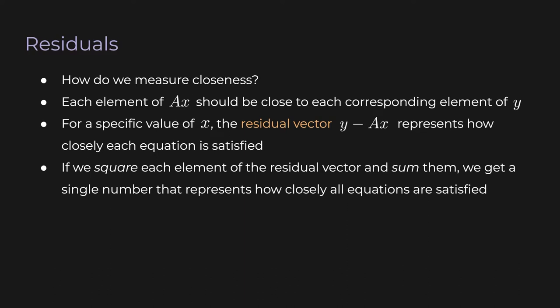If we square each element of the residual vector and then sum all those together, we're going to get a single number that represents how closely all the equations are satisfied. And obviously if all the elements of the residual vector are zero, that means that you've satisfied every equation perfectly. But if you're a little bit off, it doesn't matter if you're above or below, both of them are equally bad. So we can instead think of the square. You could also think of absolute value, but square is a little more useful and it's a lot easier to work with algebraically. So we square each element of the residual vector and we sum them. And the number that we get is called the residual sum of squares, the RSS.